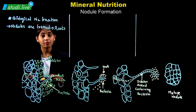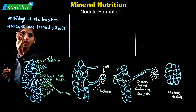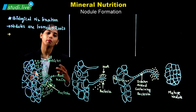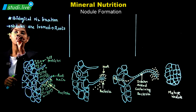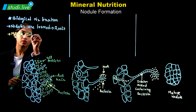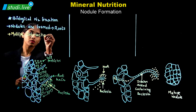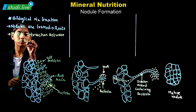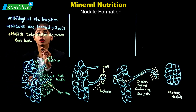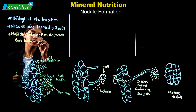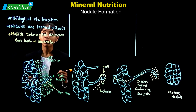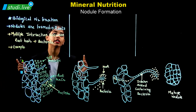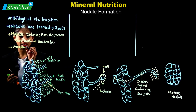You must be thinking: how are these nodules formed? Basically, it involves multiple interactions between the root hair and the bacteria. The root hair is the outermost part of the root. The bacteria we are talking about here — one example is rhizobium — and generally the same process is happening in all nodule formation.